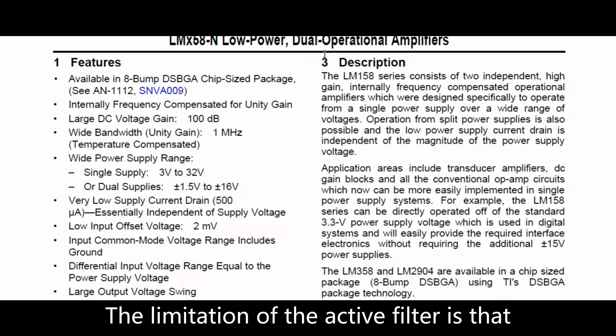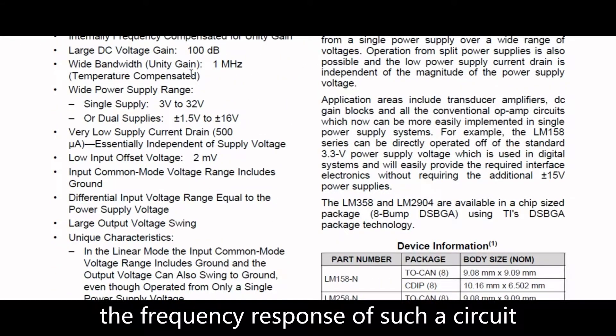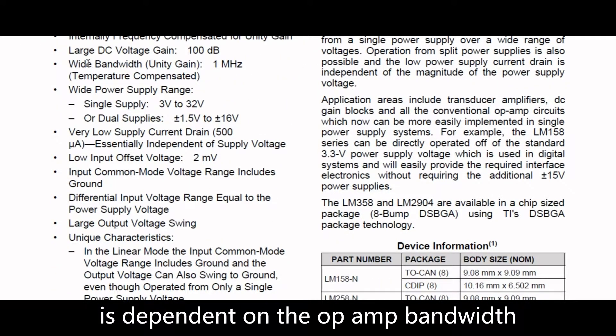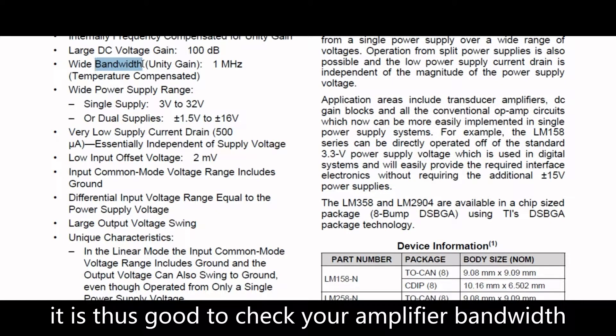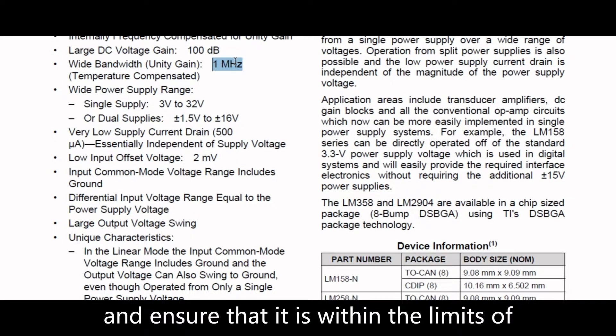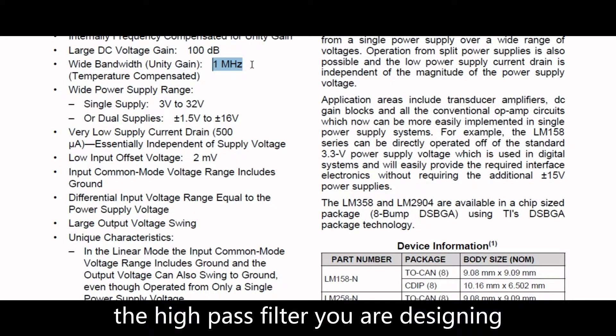The limitation of the active filter is that the frequency response of such a circuit is dependent on the op-amp bandwidth. It is thus good to check your amplifier bandwidth and ensure that it is within the limits of the high pass filter you are designing.